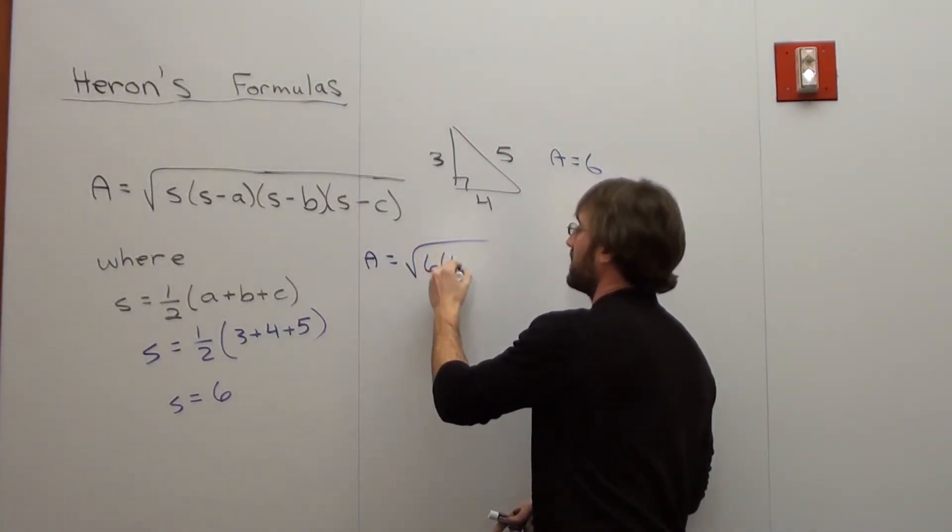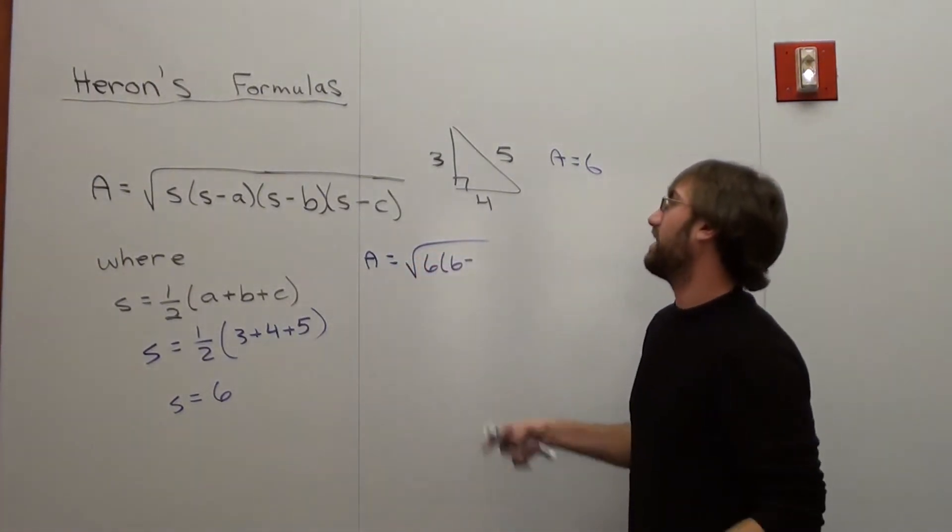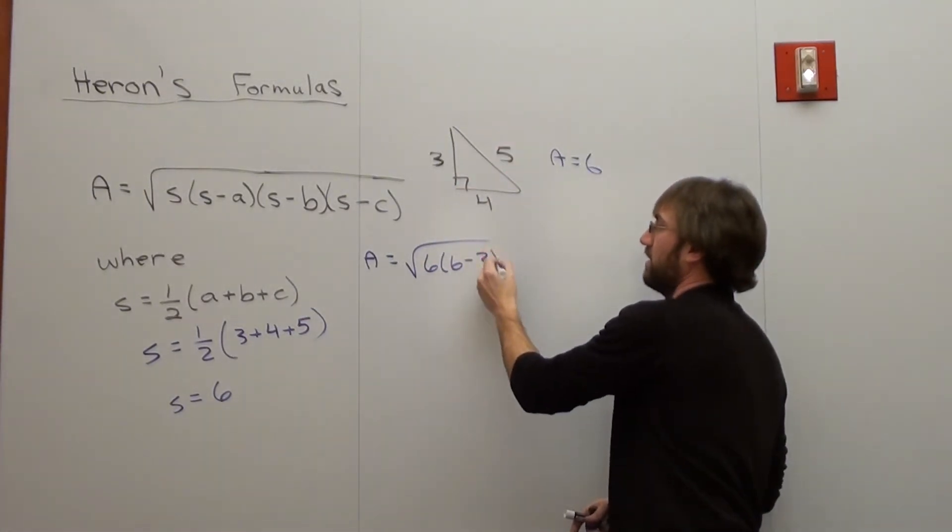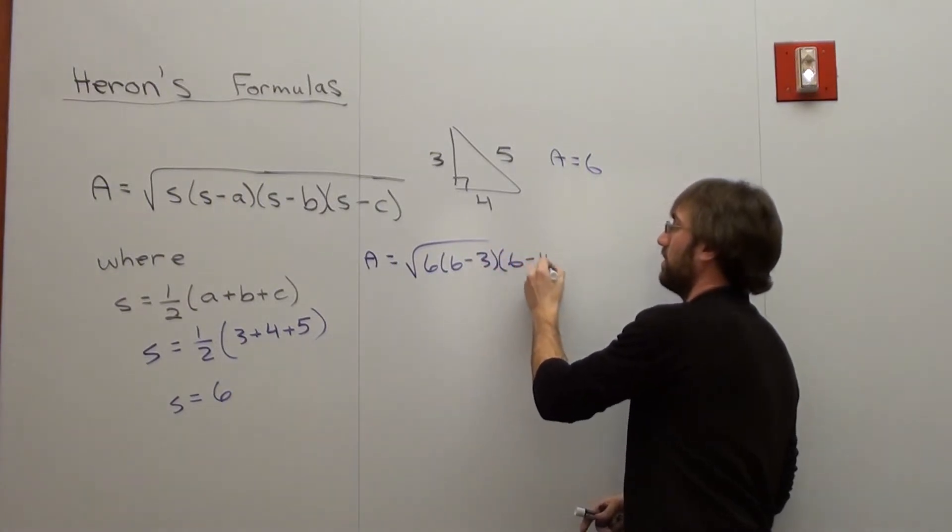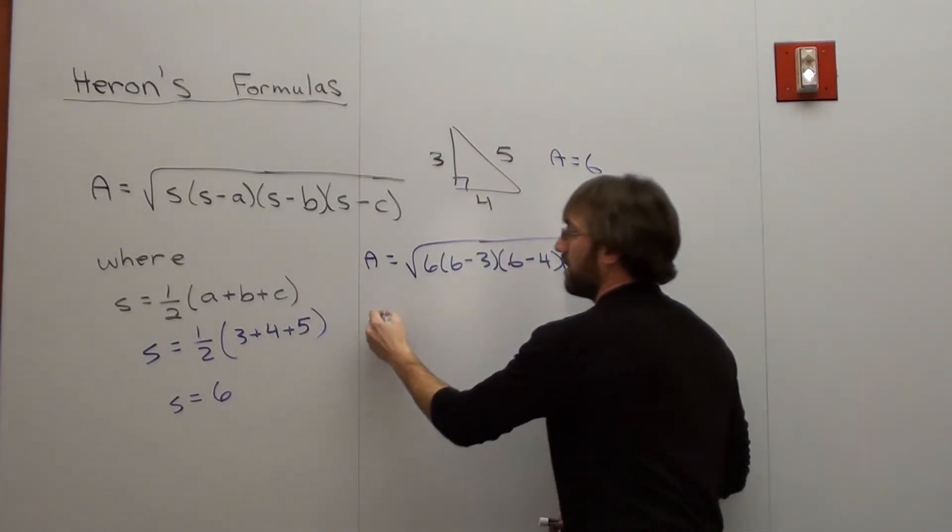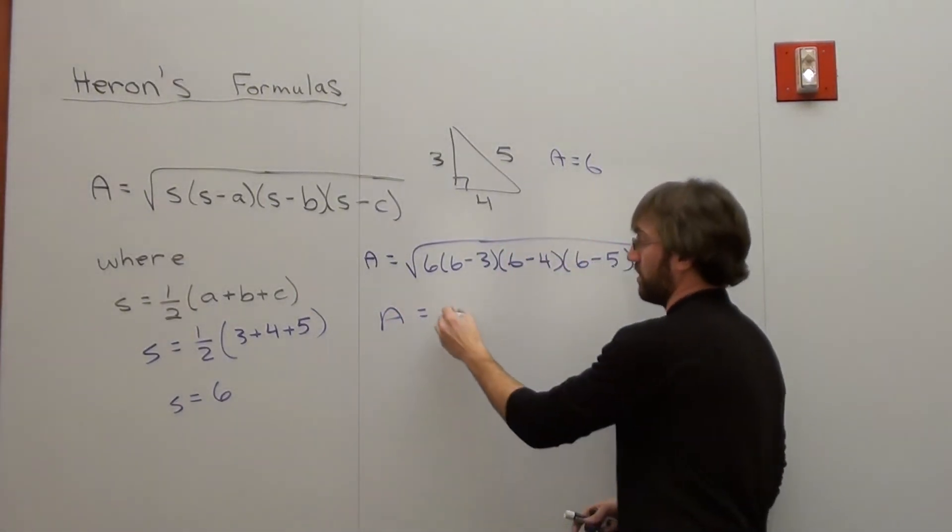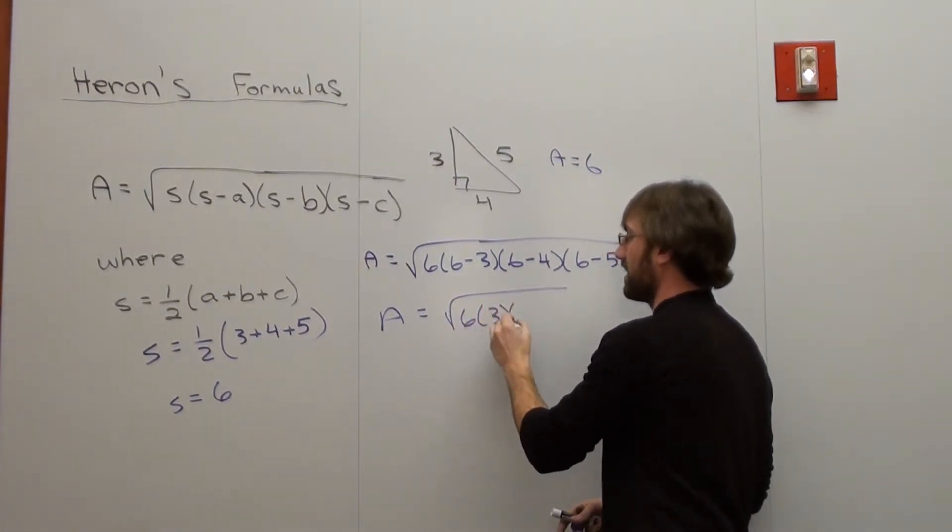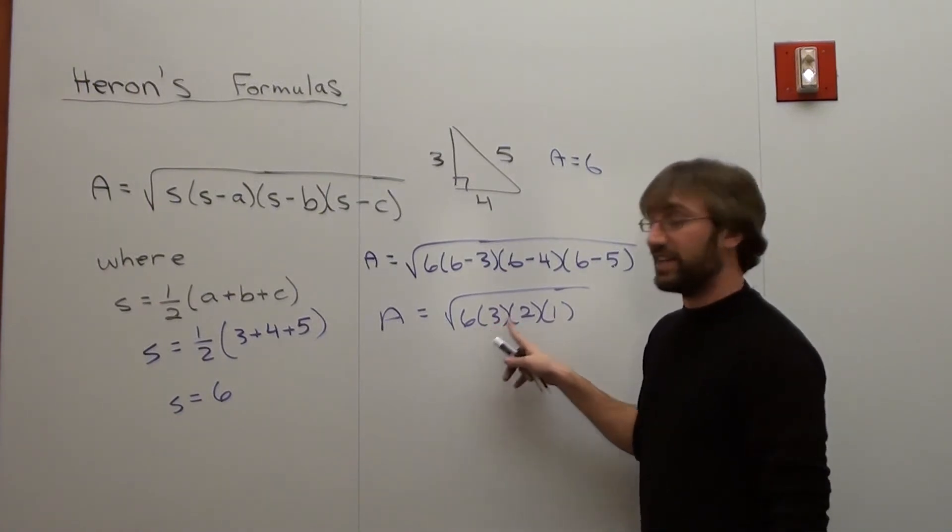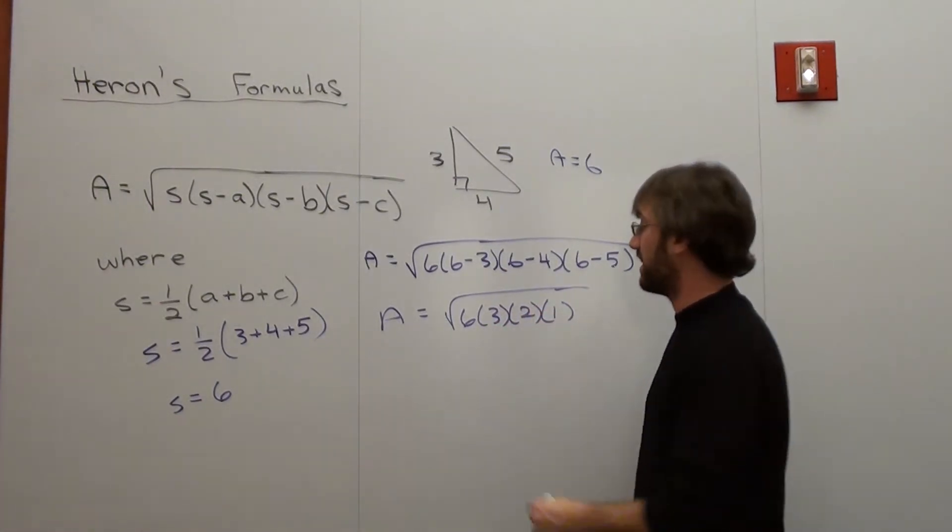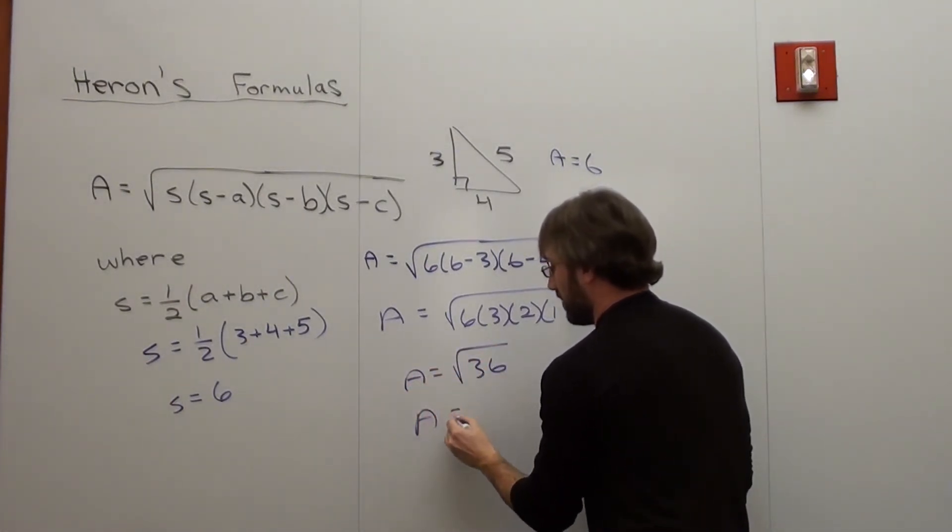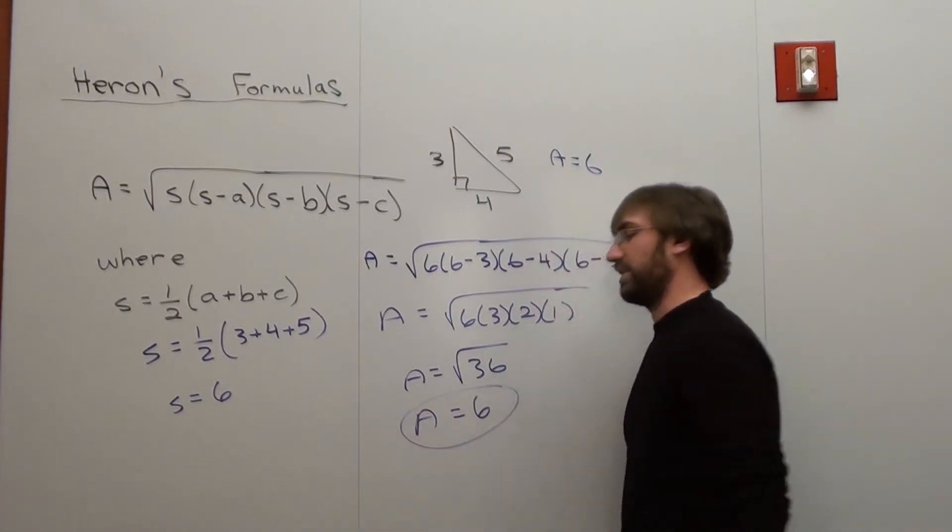So area equals—let's go ahead and figure that out. It's 6 times 6 minus my A side, and it doesn't really matter which one's A and which one's B. It just matters which one's C. So I'm going to call my 3 A times 6 minus 4, which is my B, times 6 minus 5. Area equals square root of 6 times 3 times 2 times 1. 6 times 3 is 18, 18 times 2 is 36, 36 times 1 is still 36. That's the square root of 36. Therefore, the area is 6. Bam.